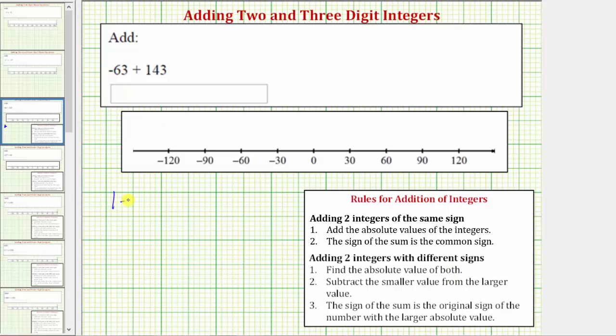So we need to find the absolute value of negative 63 and the absolute value of positive 143. The absolute value of a number is the number's distance from zero, and distance is always positive. Therefore the absolute value of negative 63 is positive 63, and the absolute value of positive 143 is positive 143.